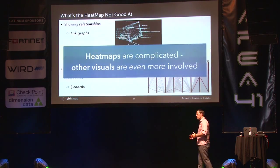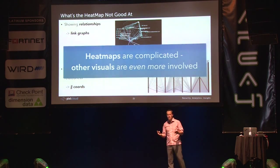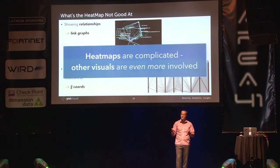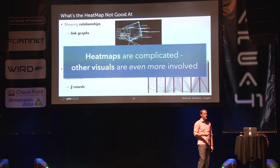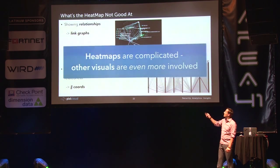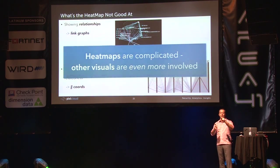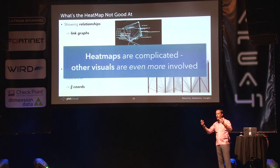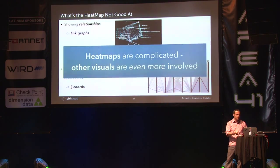Heat maps are fairly simple to understand by themselves, but there's a whole bunch of challenges when you actually implement them. And if you were to implement a link graph instead — what happens when you hover over a node? Does selecting one select everything connected to it? How do you define patterns? It gets pretty complicated.